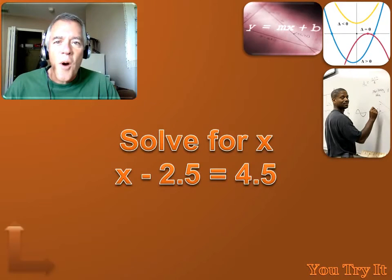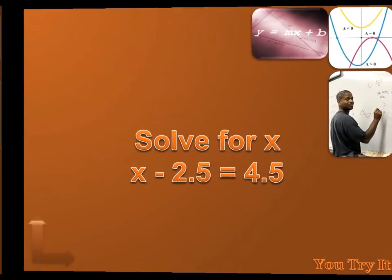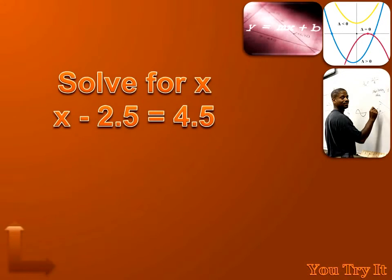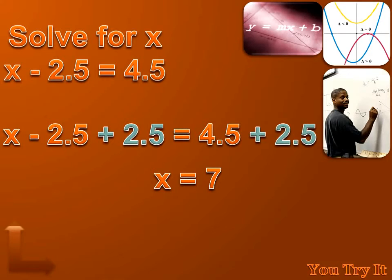Now you try this one. Hit the pause button, do the problem, and then hit the forward key to move on to the answer. Solve for x: x minus 2.5 equals 4.5. To get rid of that minus 2.5 and isolate x, I use the inverse operation — I add 2.5 to both sides of the equation. That gives me x equals 4.5 plus 2.5, or x equals 7.